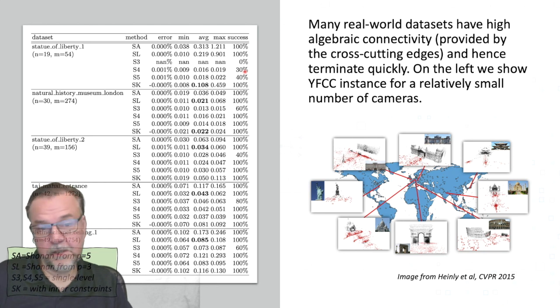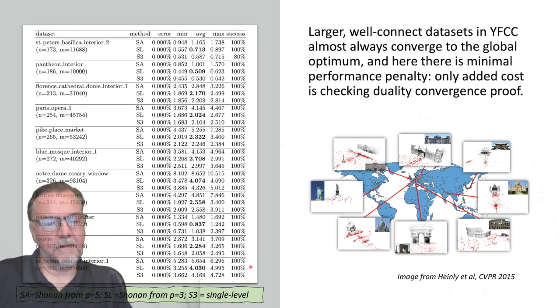In larger datasets, it's almost a hundred percent all the time, even for at the level S3, which only optimizes at the SO3 level. And that means that in those cases, SA, which is Shonan averaging, maybe it has to do a lot of work. In 20 percent of the cases, it has to do a little bit more work going to the next level. In most other cases Shonan converges at level three.